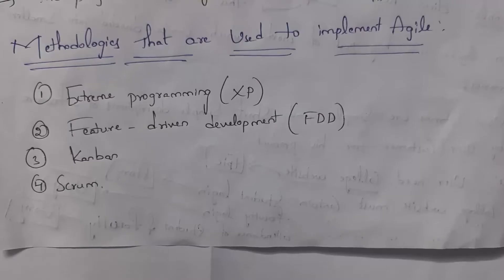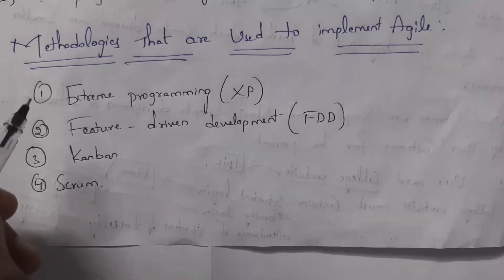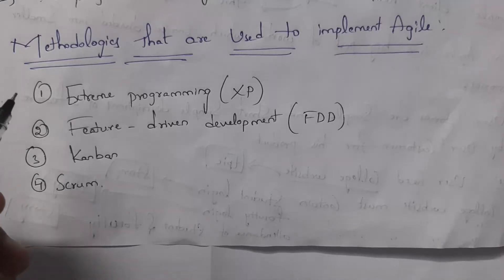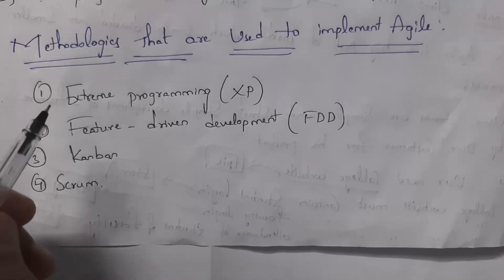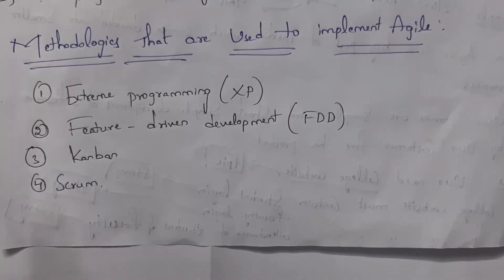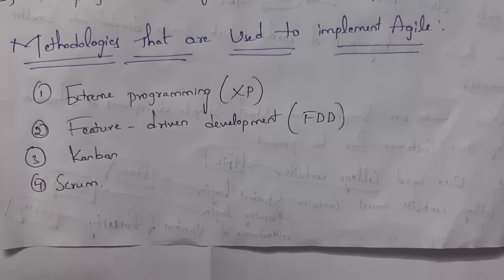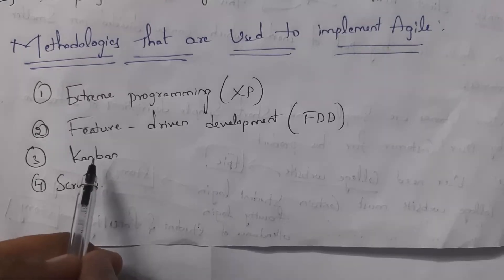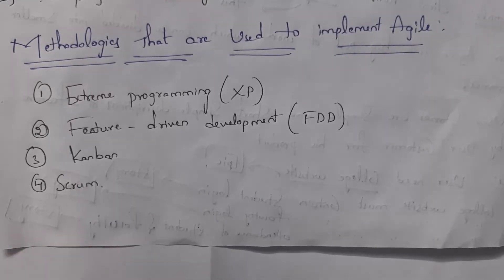We can implement the Agile process by using four methodologies: first is Extreme Programming, shortly called XP; second is Feature Driven Development, shortly called FDD; third is Kanban; and fourth is Scrum. Most software companies mainly use only Kanban and Scrum methodologies.